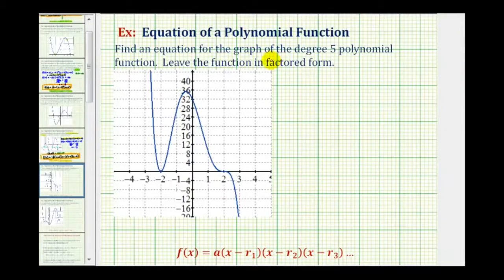We want to find an equation for the graph of the degree five polynomial function and leave the function in factored form.